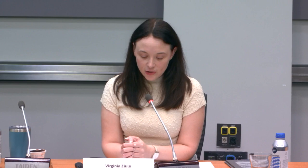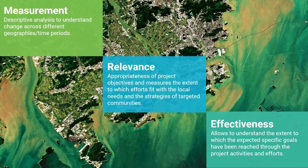I'll give you some specific applications of how we use these in IEG. We normally think about geospatial applications within a framework of three categories: measurement, relevance, and effectiveness. Measurement refers mostly to descriptive analysis to understand change across time and space. Relevance refers to the appropriateness of project objectives and how well efforts fit local needs. Effectiveness allows us to understand the extent to which expected specific goals have been reached through project activities.